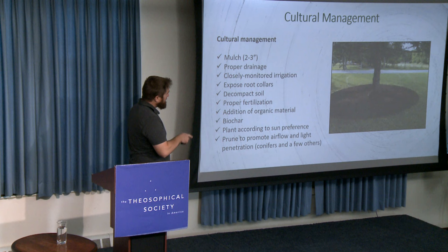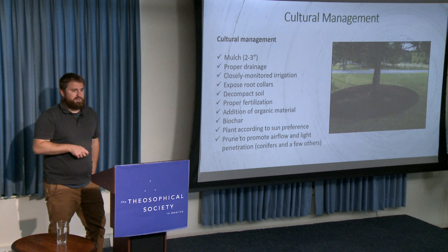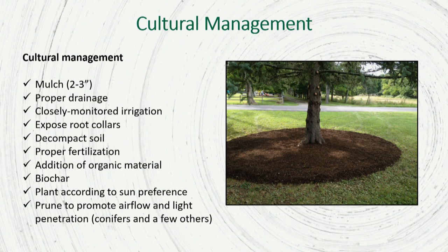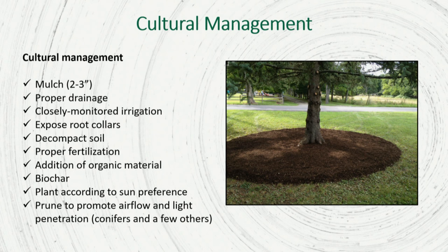When managing what we have, check all of your cultural boxes — all of those growing conditions. Make sure there's mulch, proper drainage, and that irrigation is closely monitored. We haven't had a good steady rain in about a month, so if you have a tree you love, set a hose on it on a trickle for a couple hours, moving it around the base. Make sure root collars are exposed. It's all about minimizing stress.